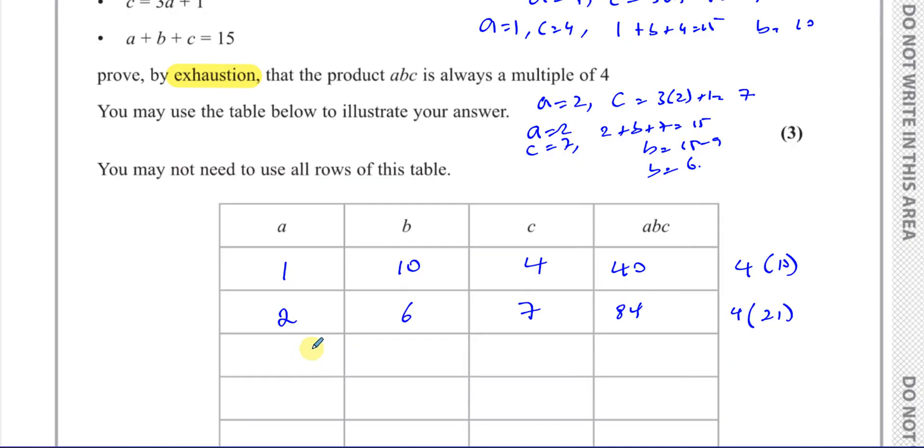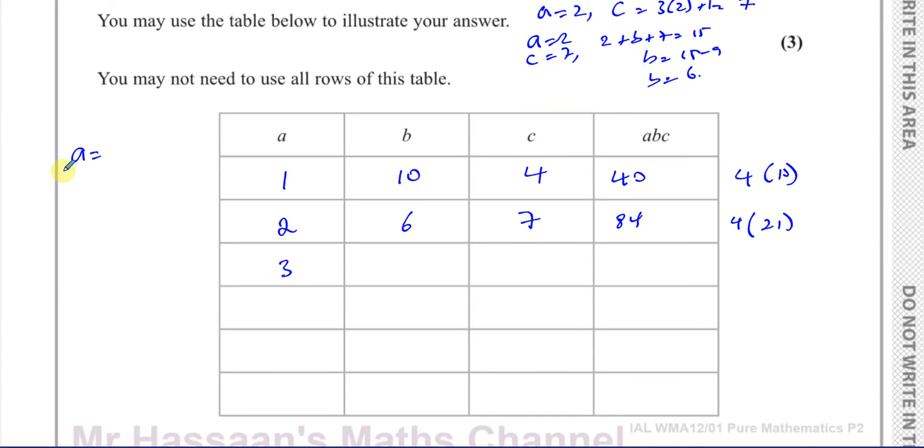And when A equals 3, let's see what's going to happen to C. C is going to be 3 times A plus 1, so it's 3 times 3 plus 1, which is going to give you 10. So when A equals 3, C equals 10, and B is going to be 2. Of course they have to add up to 15. So that's going to be 6 times 10, which is 60. And 60 is the same as 4 times 15.